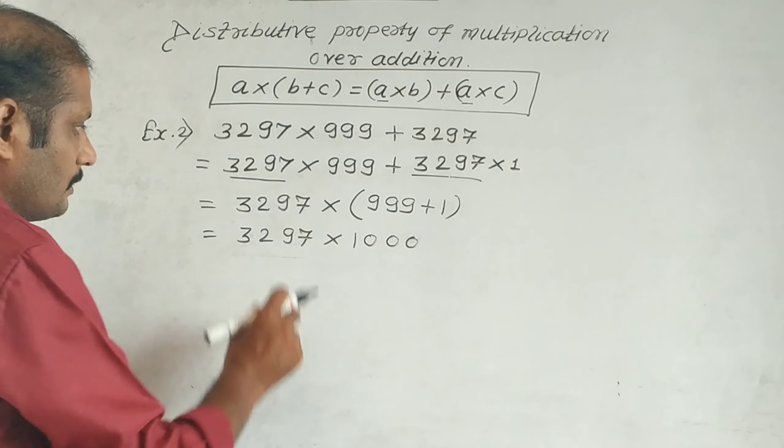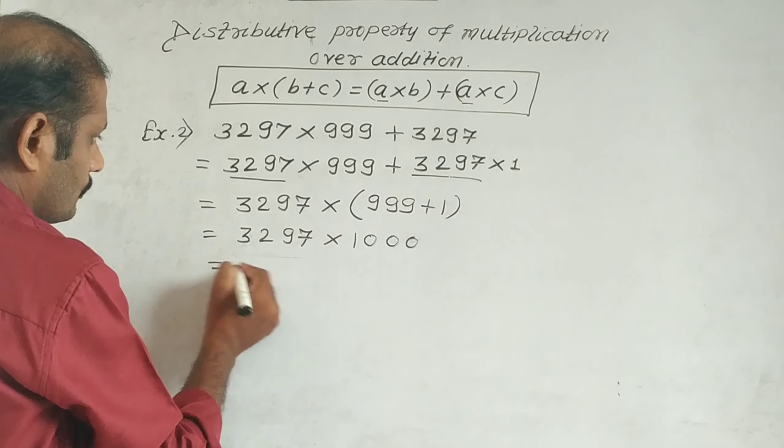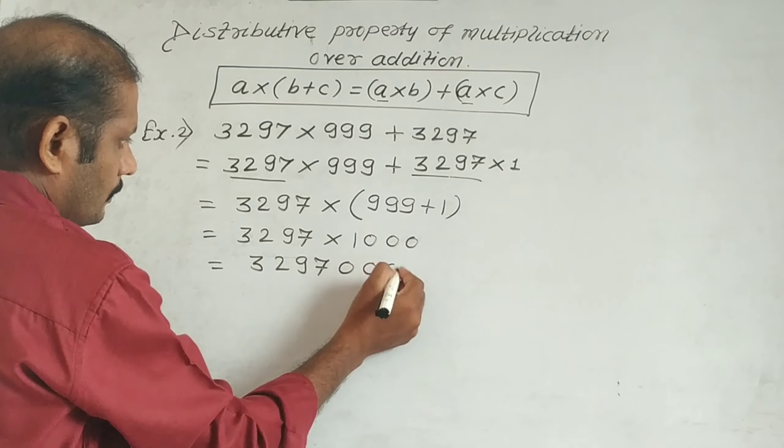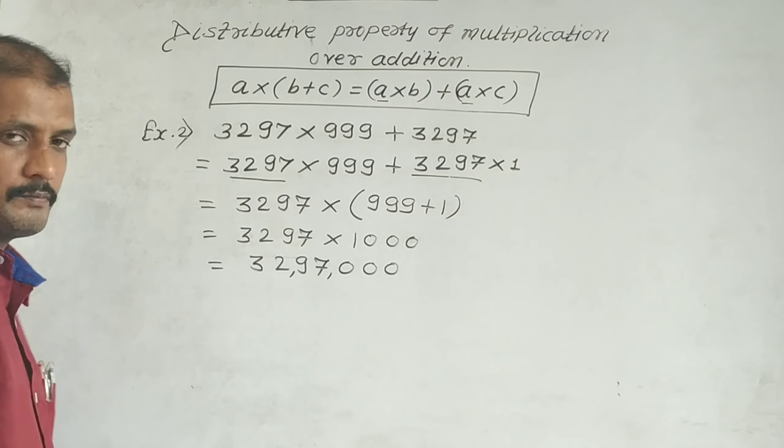Now multiplying by 1000 means adding three zeros after this number. So 3297 becomes 3,297,000. This is the answer. Got it?